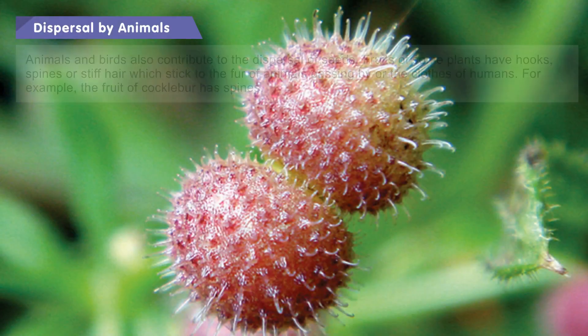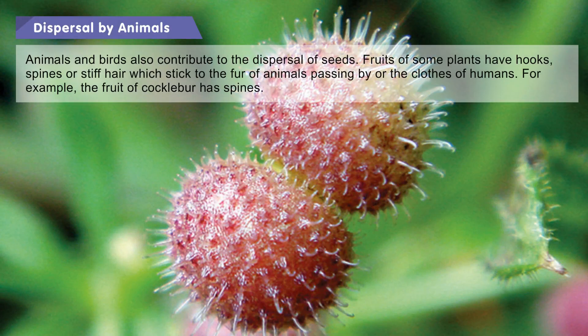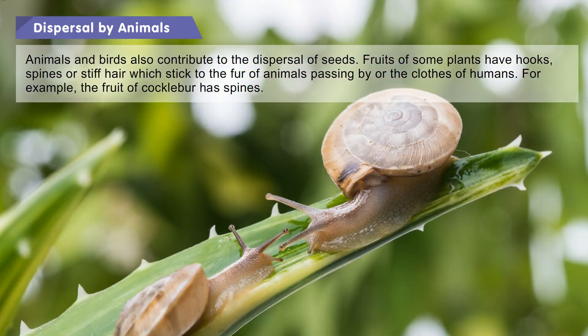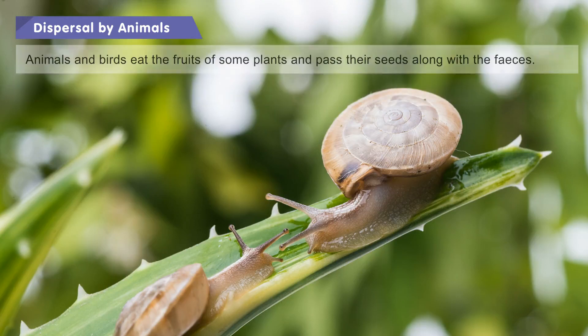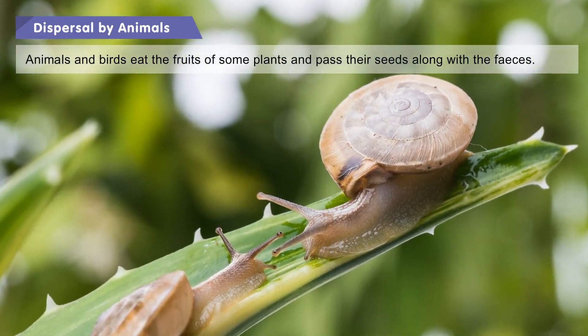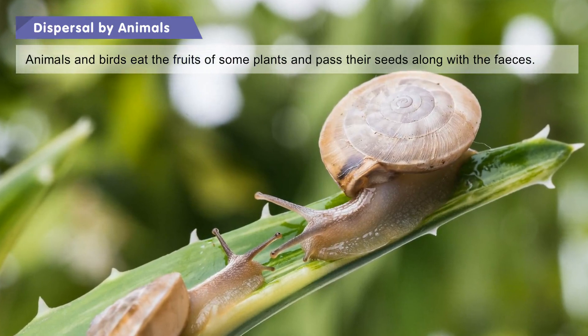Dispersal by animals: Animals and birds also contribute to the dispersal of seeds. Fruits of some plants have hooks, spines, or stiff hair which stick to the fur of animals passing by or the clothes of humans. For example, the fruit of cocklebur has spines. Animals and birds also eat the fruits of some plants and pass their seeds along with their feces.